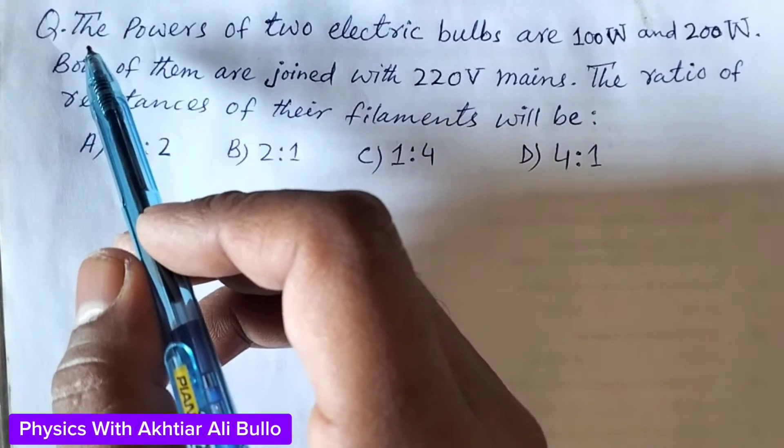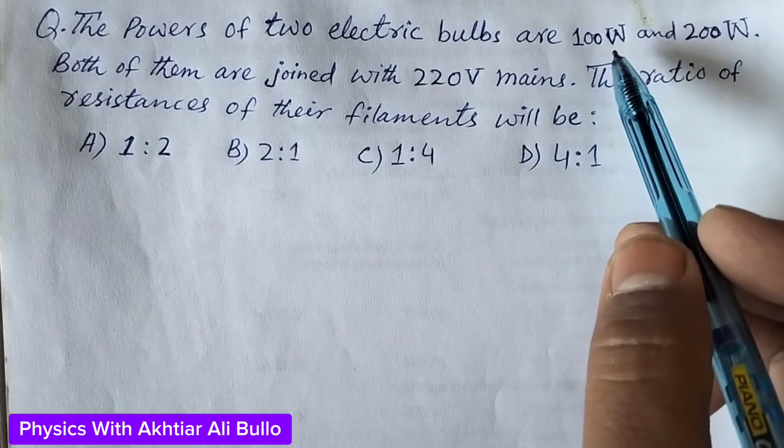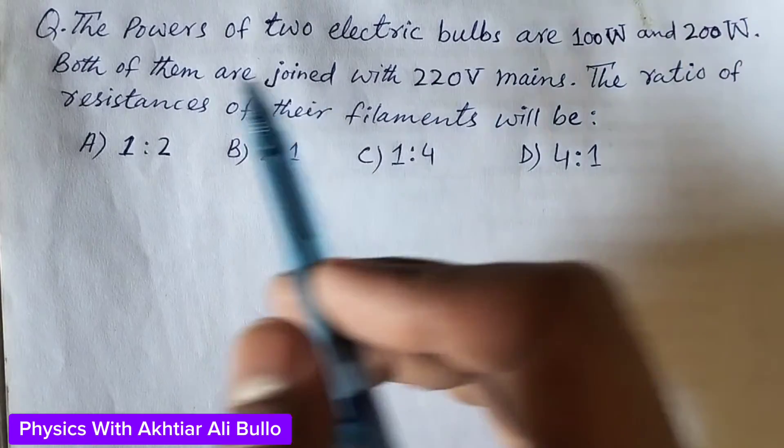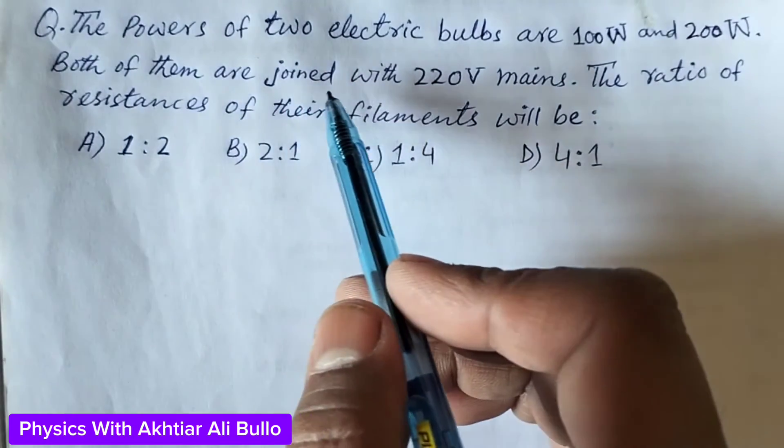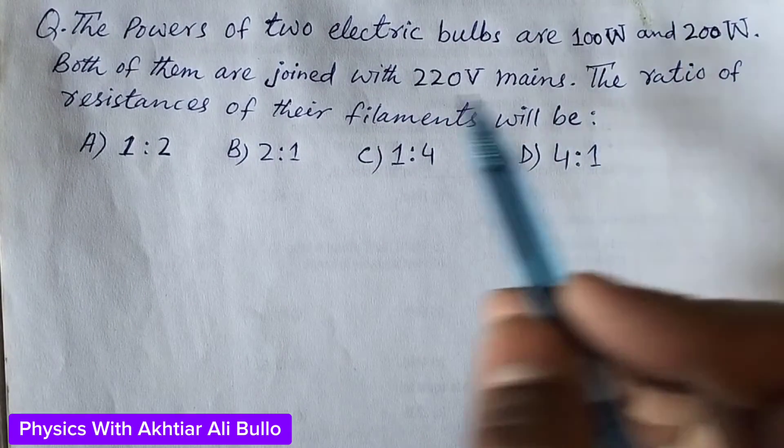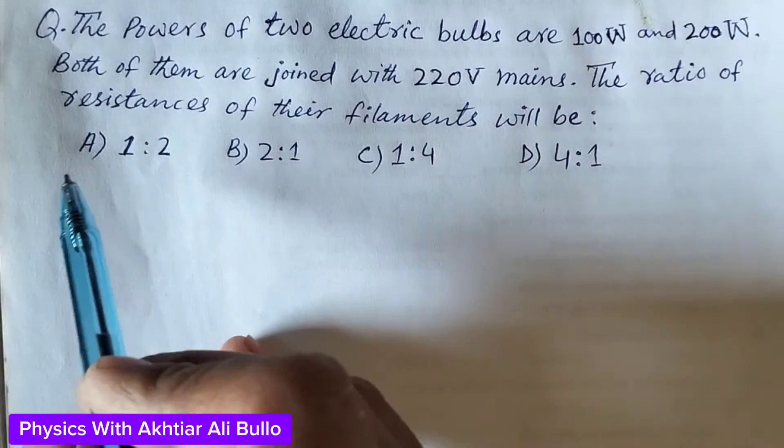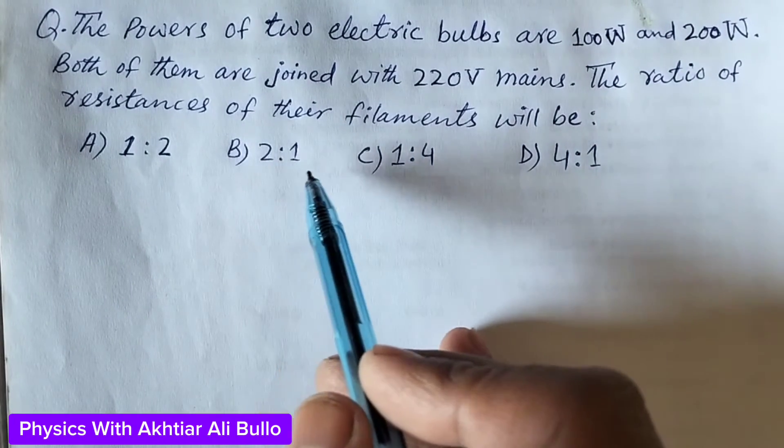The question is: the powers of two electric bulbs are 100 watt and 200 watt. Both of them are joined with 220 volt mains. The ratio of resistances of their filaments will be: A) 1:2, B) 2:1, C) 1:4, D) 4:1.